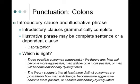Looking at two examples: 'Three possible outcomes suggested by the theory are: men will become more aggressive, men will become more passive, or men will become emotionally dysregulated.' That's incorrect — the introductory clause 'three possible outcomes suggested by the theory are' is not a complete sentence. 'Outcomes are' has no predicate — no rest of the sentence — so you can't use a colon there. The second example, 'The theory suggests that at least three distinct outcomes are possible for how men will change: become more aggressive, become more passive, or become emotionally dysregulated,' is correctly punctuated.